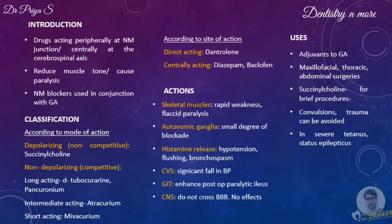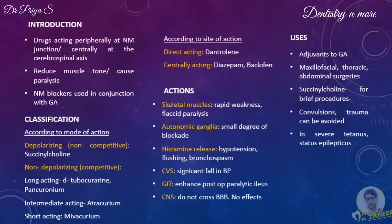According to site of action, muscle relaxants are classified into direct acting and centrally acting. Direct acting muscle relaxants inhibit muscle contraction by decreasing the calcium release from the sarcoplasmic reticulum. For example, dantrolene is a direct acting muscle relaxant. Centrally acting muscle relaxants reduce skeletal muscle tone by a selective action in the cerebrospinal axis without altering consciousness. All centrally acting muscle relaxants have some sedative property and overlap with anti-anxiety drugs. Both direct acting and centrally acting muscle relaxants have no effect on neuromuscular transmission or on muscle fibers.